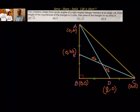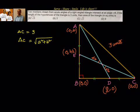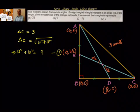Now, we have been given that AC is equal to 3 units. AC is also equal to the square root of (a² + b²). That means a² + b² is equal to 9. This is our equation number 1. So we know the relation between a and b is a² + b² = 9.